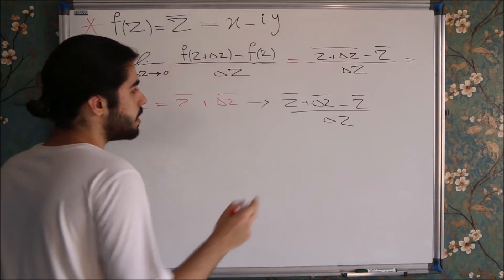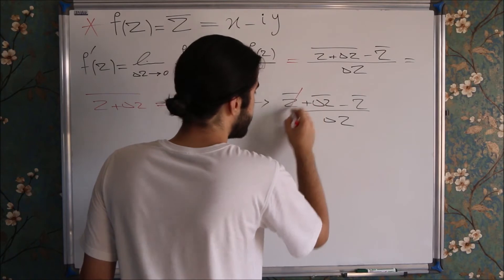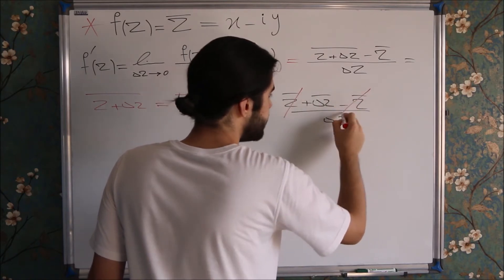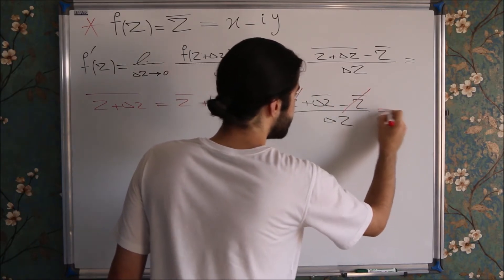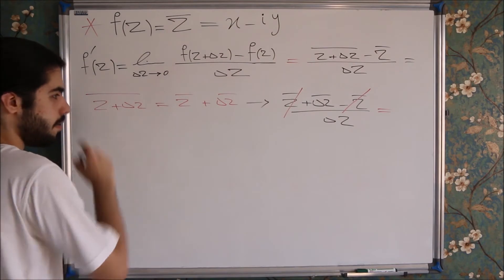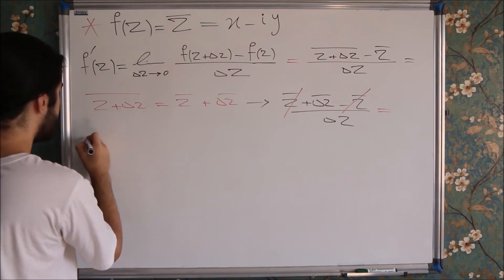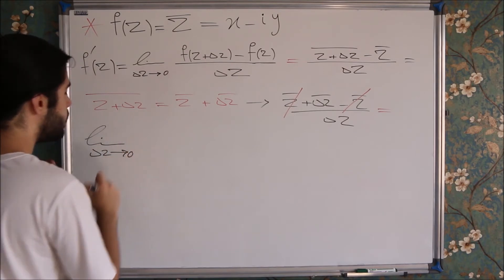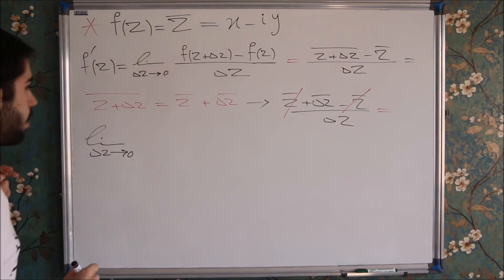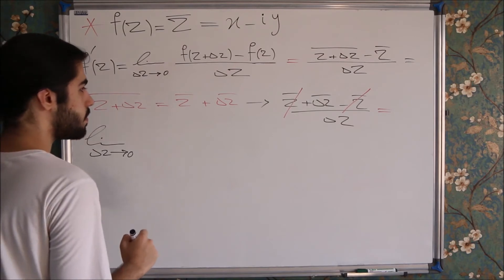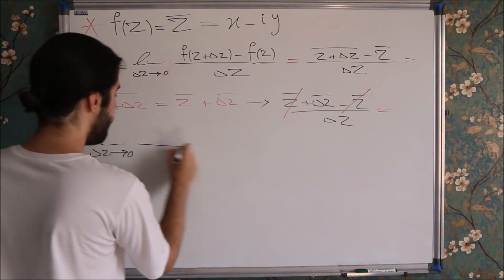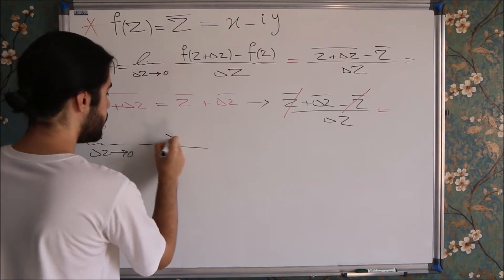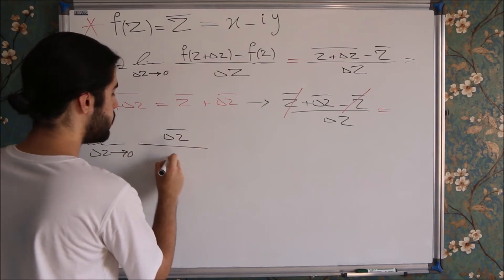It helps us because this conjugate of Z and this negative conjugate of Z will cancel out. And what remains is the limit of Delta Z when it goes to zero of the conjugate of Delta Z over Delta Z.